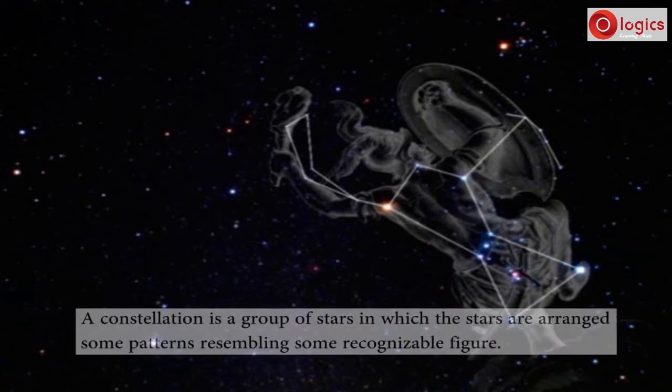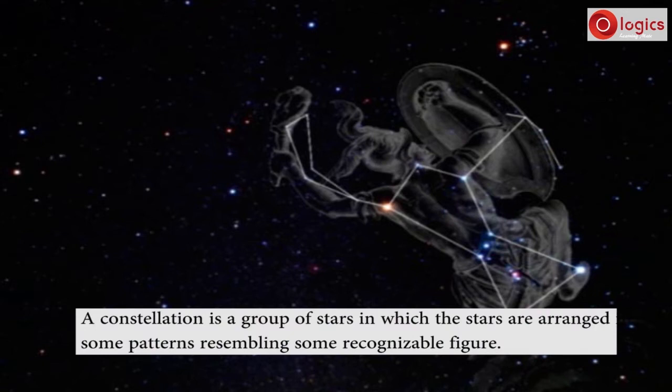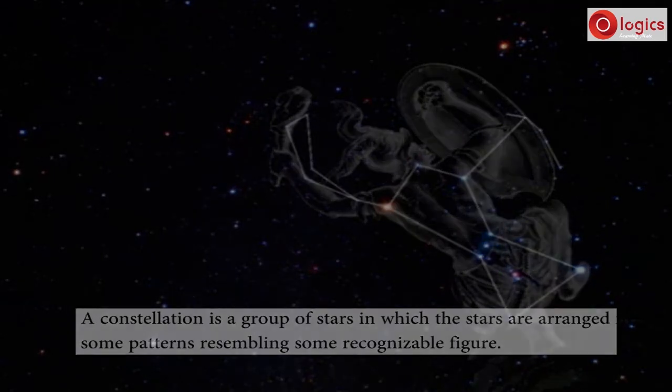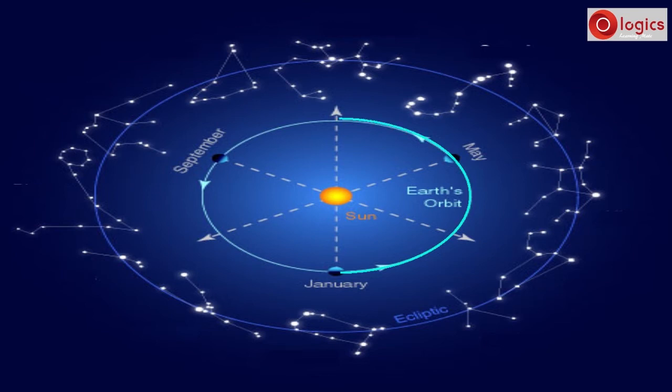A constellation is a group of stars in which the stars are arranged in some patterns resembling some recognizable figure. Around Earth's orbit, 12 constellations are named.